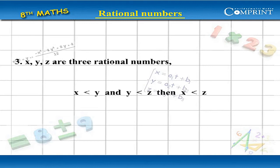3. x, y, z are three rational numbers. If x less than y and y less than z, then x less than z.